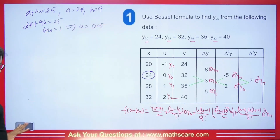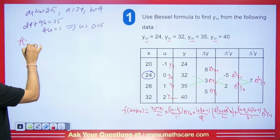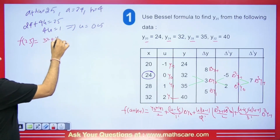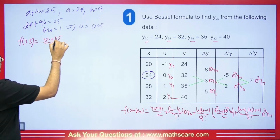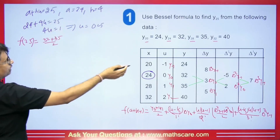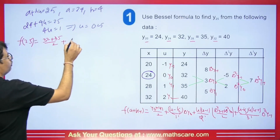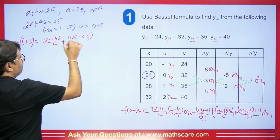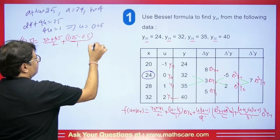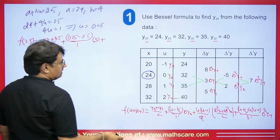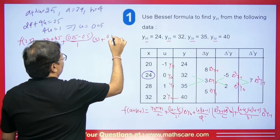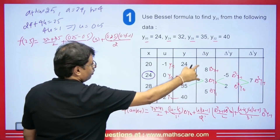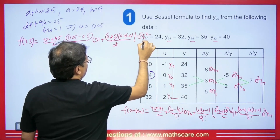When we put the value in the formula, F(25) equals: Y0 plus Y1 which is 32 plus 35 divided by 2, plus (U minus 1/2) upon 1 factorial — U is 0.25 so 0.25 minus 0.5 equals minus 0.25, divided by 1 — times del Y0, which gives 3. Then plus U times (U minus 1) upon 2 factorial — 0.25 times (0.25 minus 1) upon 2 — times the average of del squared Y minus 1 and del squared Y0: (minus 5 plus 2) upon 2.